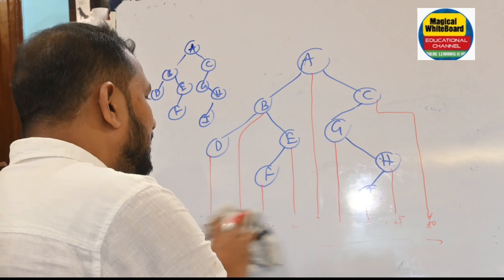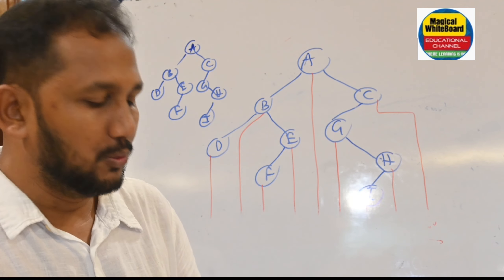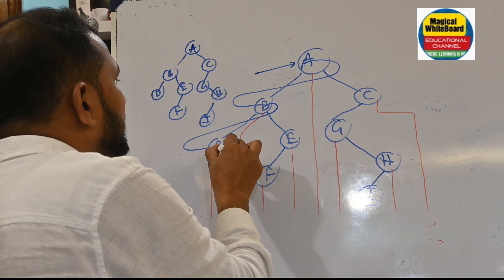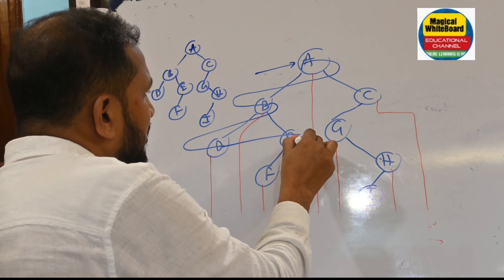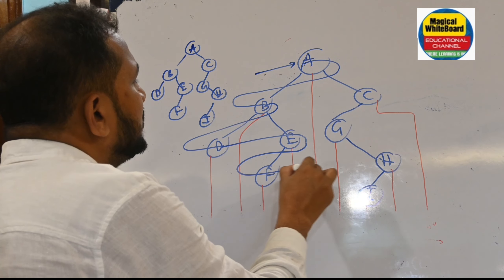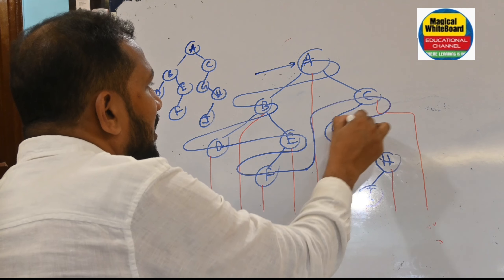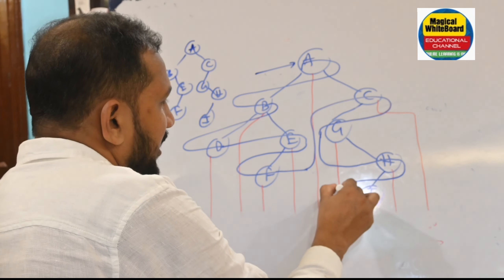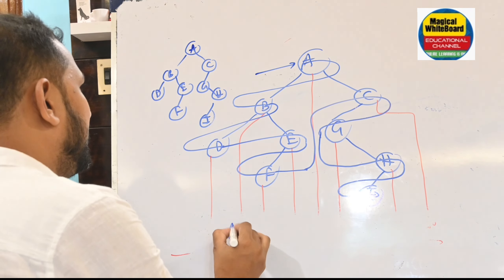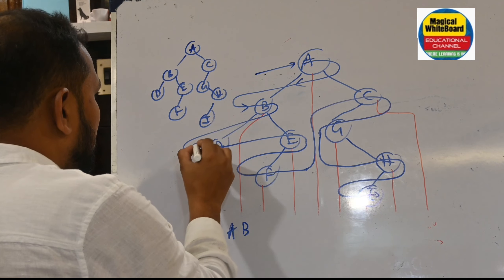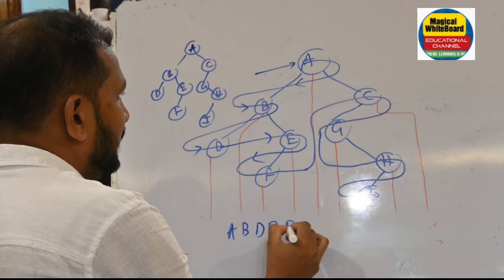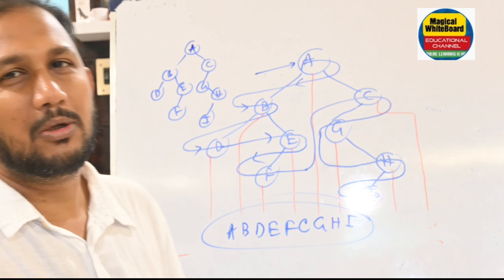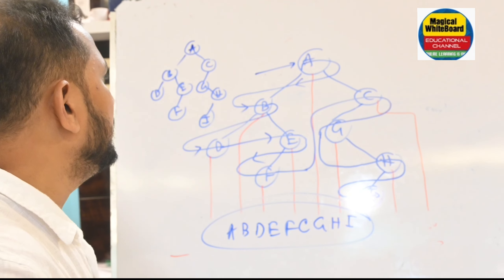For pre-order using the shortcut, visit the root first. Root first means A, then next root is B, then left subtree — D, then right with root E, then F, then right subtree root C, then G, then H, then I. Pre-order result using the quick method: A, B, D, E, F, C, G, H, I.